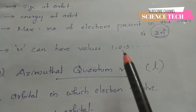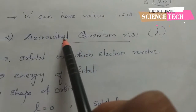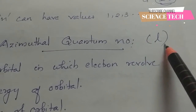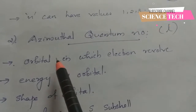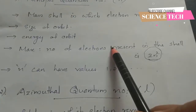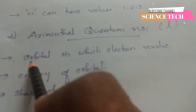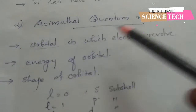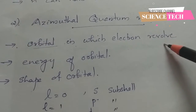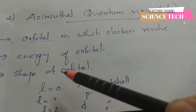The value of n is 1, 2, 3, etc. The next one is the azimuthal quantum number, denoted by small letter l. The principal quantum number gives information about the orbit, and the azimuthal quantum number gives information about the orbital. It gives information about the orbital shape.